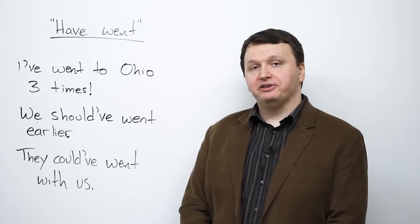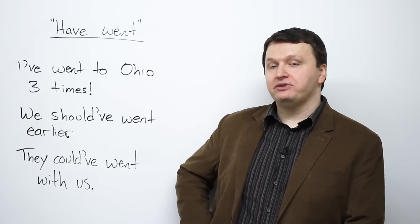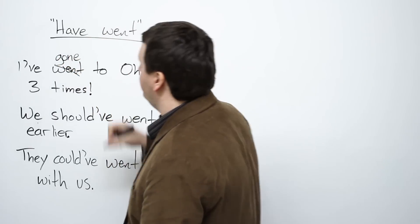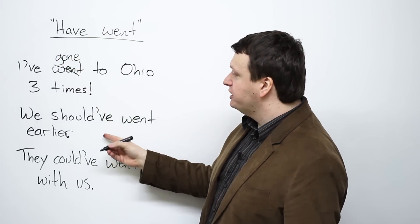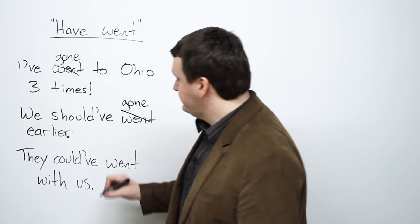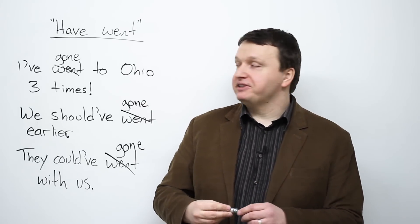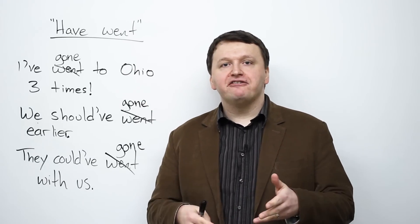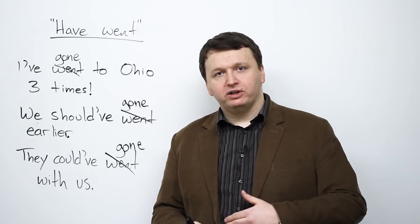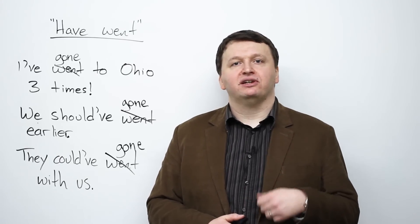All of these are wrong because they use the incorrect form of the verb 'go'. Instead, we say: 'I have gone to Ohio three times', 'We should have gone earlier', 'They could have gone with us.' Any time you use 'have' plus the verb 'go' — could have, should have, might have, would have — please use the correct form, which is 'gone'.